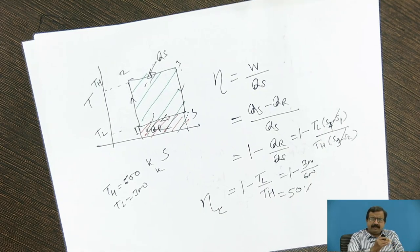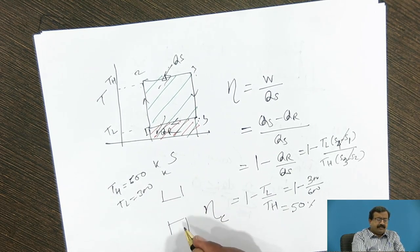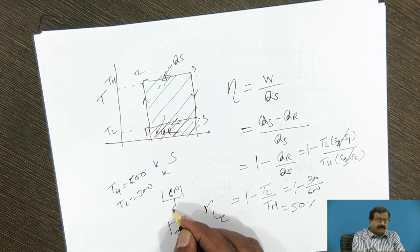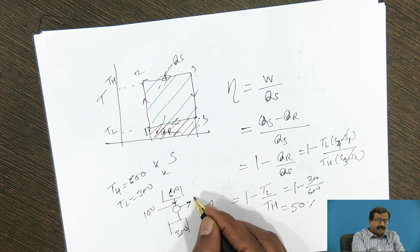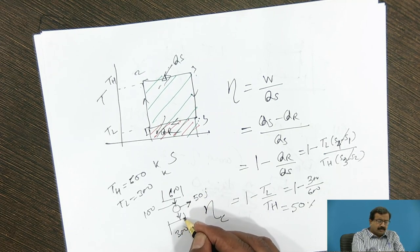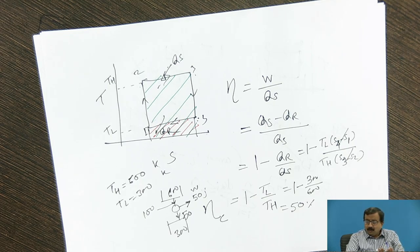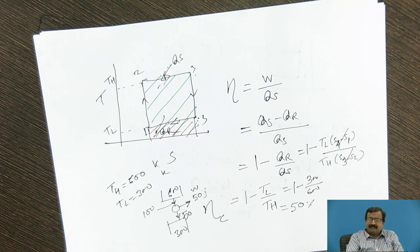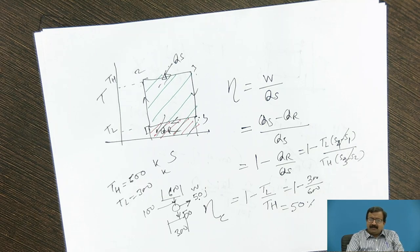Now, if I calculate the efficiency of this engine, it will be, TL is 300, this is 600, so my efficiency is going to be 50%. Means, if I have got 600 and 300, my efficiency is 50%. What is the meaning of this? If I have this T1 at 600, this T2 at 300, and suppose I take 100 Joules from this temperature, I can reject 50 Joules to the lowest reservoir and I can get the work of 50. Now, this is a valid expression. Now, whether this engine is reversible or not, that we don't know.